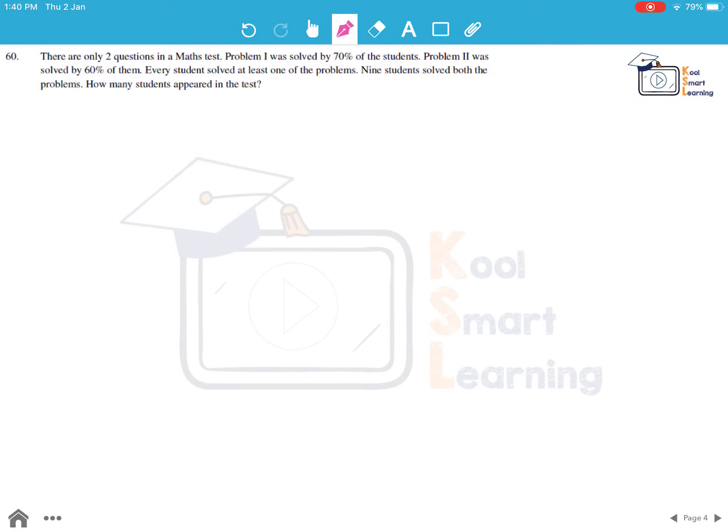Moving to the last question of this session and this is also the last question of the paper. There are only two questions in a maths test. Problem 1 was solved by 70% of the students. Problem 2 was solved by 60% of them. Every student solved at least one of the problems. 9 students solved both problems. How many students appeared in the test?